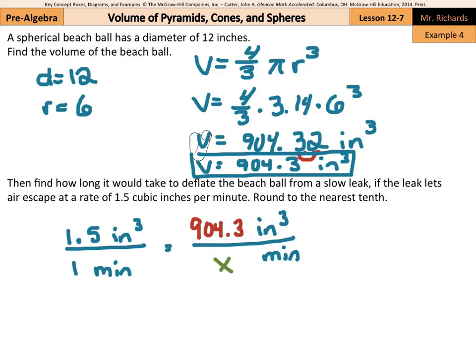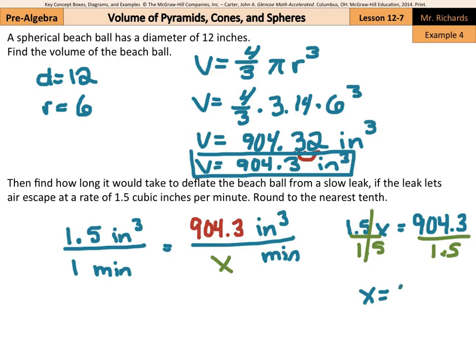So when we cross-multiply here, we'll have 1.5 times x is equal to the 904.3 times 1, which is just 904.3. And if we divide by the 1.5 from both sides, our simplified answer is 602.86. And when we round that to the nearest tenth, this is going to be 602.9 minutes.